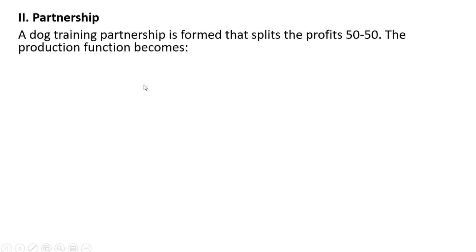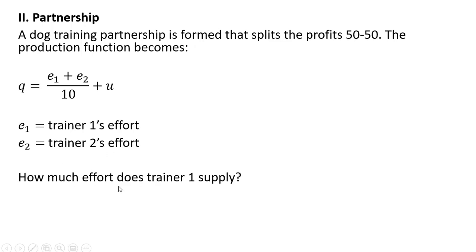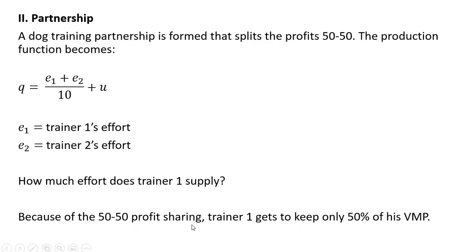All right, Case 2, we're going to look at a partnership. A dog trainer partnership is formed that splits the profits 50-50. The production function becomes now as follows. E subscript 1 is trainer 1's effort. E subscript 2 is trainer 2's effort. How much effort does trainer 1 supply? Because of the 50-50 profit sharing, trainer 1 gets to keep only 50% of the value of his marginal product.